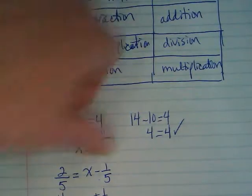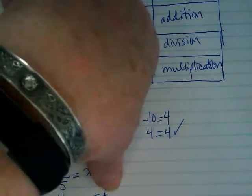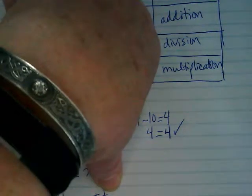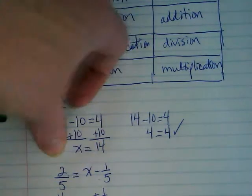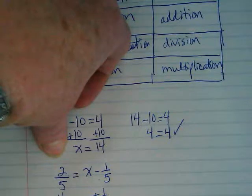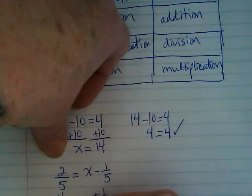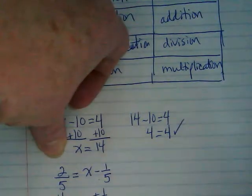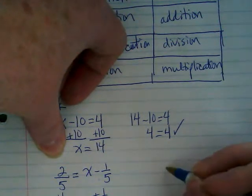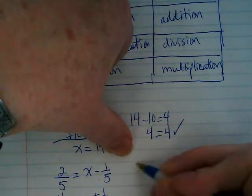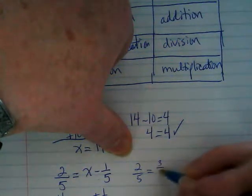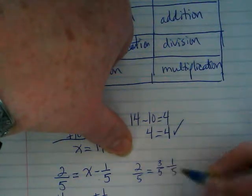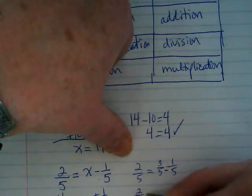We could easily do it that way. Negative 1 fifth, positive 1 fifth, 0, correct? What do I have on the right then? X. And what do I have on the left? 2 fifths plus 1 fifth is 3 fifths. I could also solve this, well first let's check it, 2 fifths equals 3 fifths minus 1 fifth. Does that equal 2 fifths? Yes, it does.